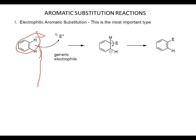Benzene is going to react with an undefined electrophile, shown here. What happens is the electrophile attacks the benzene ring kind of the way it would attack an alkene. And this generates a new carbocation that you see right here.